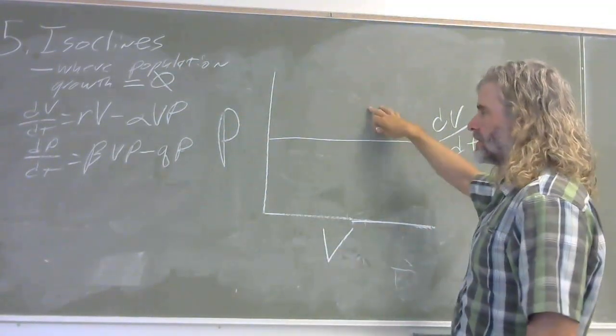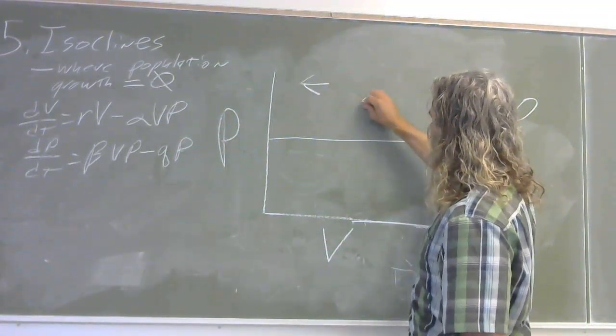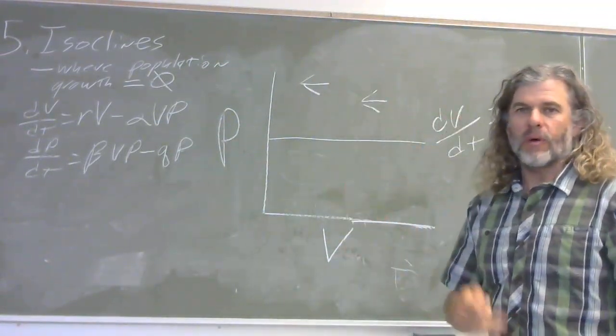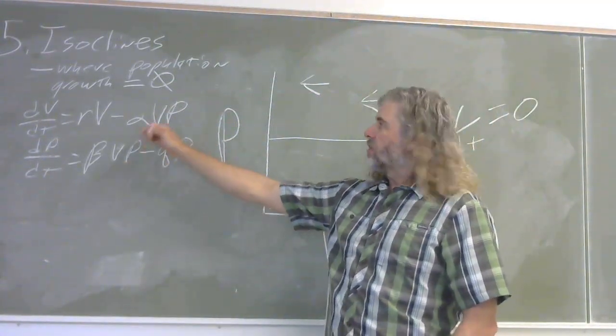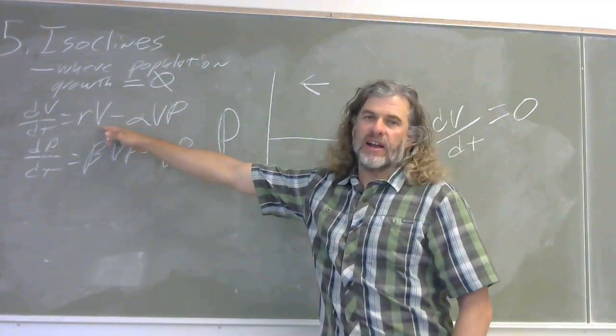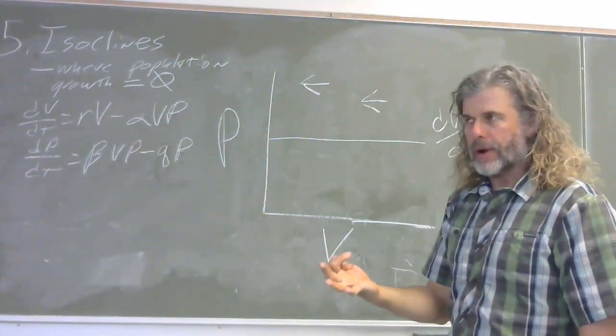Now, what's happening here again, this is the number of prey that are available. And what's going to happen here is above, in this case, above this isocline, the population dynamics of the prey are negative. Now, why does that happen? That's because predators are eating them. So predators have a negative effect on the prey population, the prey are being eaten.